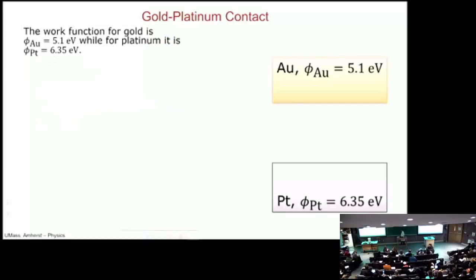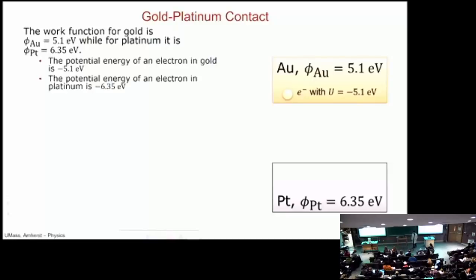So here's our gold. Here's our first battery we're going to talk about. We're going to take gold and platinum and touch them together. Simplest battery I can probably think of. So gold has a work function of about 5.1 eV, and platinum has a work function of about 6.35 eV. So this means that an electron in the surface of the gold has a potential energy of negative 5.1 eV, right? Because the Q of an electron is negative. Potential energy of electron in platinum is minus 6.35 eV.